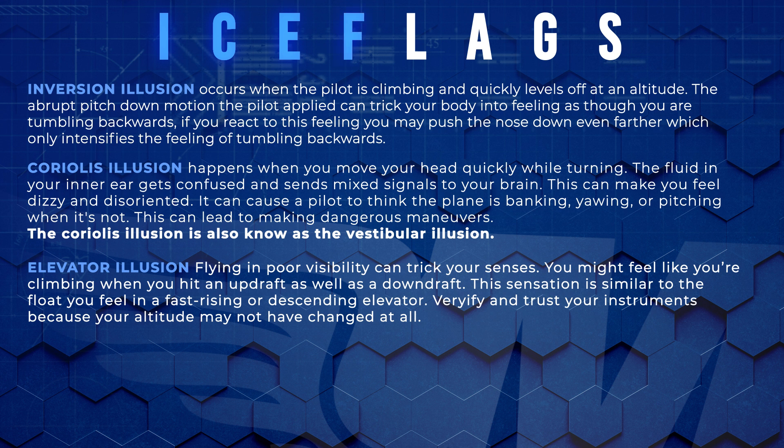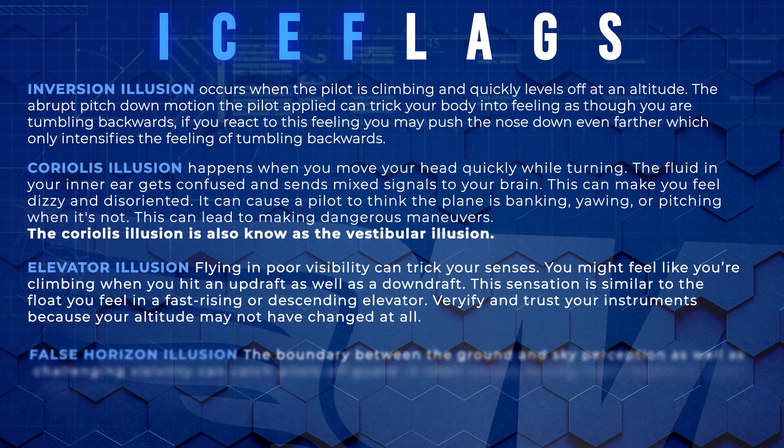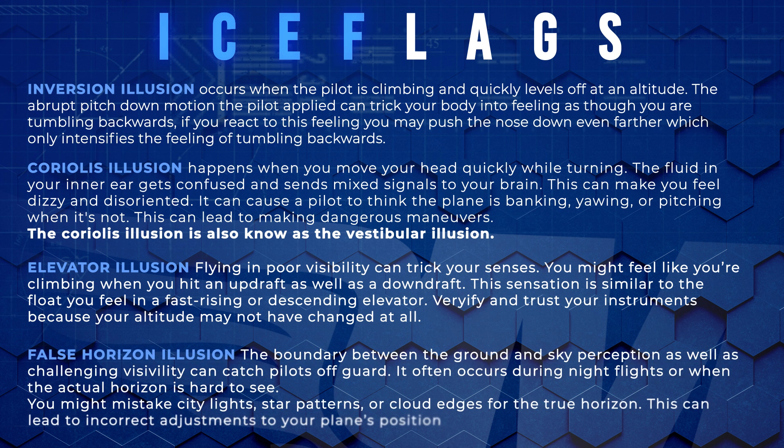F is for false horizons. This illusion can be caused by city lights, sloping clouds, or sometimes just the stars. This will lead pilots to believe that there's a false horizon instead of the real one. The pilot will tend to align the plane with this false horizon and most likely will put the plane in a very dangerous attitude.